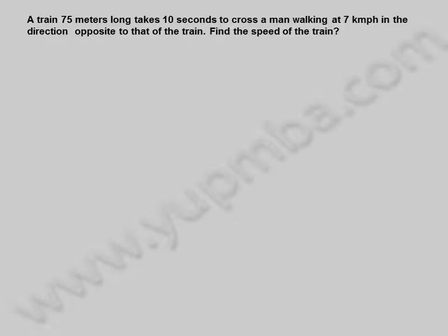A train 75 meters long takes 10 seconds to cross a man walking at 7 km per hour in the direction opposite to that of the train. Find the speed of the train.